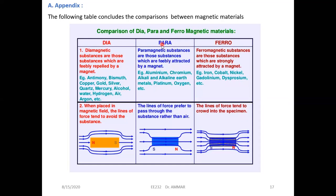We have paramagnetic materials, where the field lines prefer to pass through the material, but only a small amount of field lines are transferred. Examples include aluminum, platinum, and oxygen. In the case of ferromagnetic materials, which are used in magnetic circuits, most or all of the field lines will be transferred through the core. The main three ferromagnetic materials are iron, cobalt, and nickel. This concludes the first part of this course.